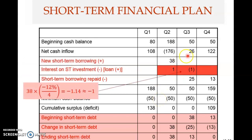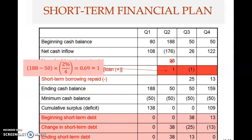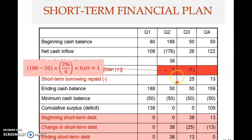Because you borrow 38 million in quarter two, the change in short-term debt reflects this increase. Beginning short-term debt was zero since there was no prior borrowing. Adding the 38 million borrowed, the ending short-term debt becomes 38 million. Moving to quarter three, the beginning cash balance is 50 million, taken from the quarter two ending cash balance.